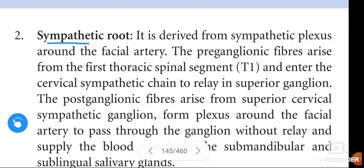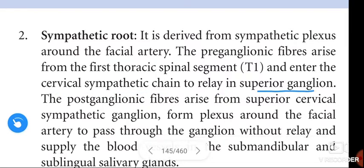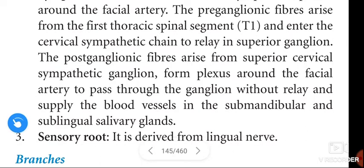The sympathetic root of the submandibular ganglion is derived from the sympathetic plexus around the facial artery. The preganglionic fibers arise from the first thoracic spinal segment (T1) and enter the cervical sympathetic chain to relay in the superior cervical ganglion. The postganglionic fibers arise from the superior cervical sympathetic ganglion, form a plexus around the facial artery, pass through the ganglion without relay, and supply the blood vessels of the submandibular and sublingual salivary glands.